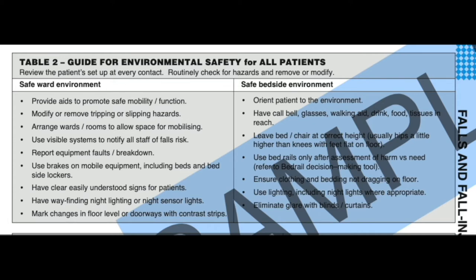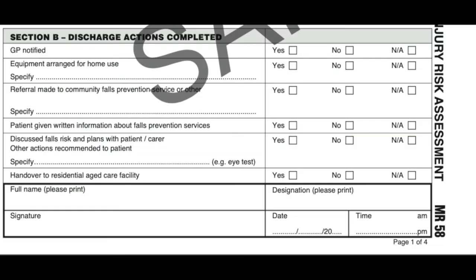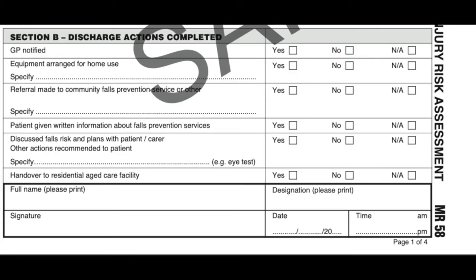Table 2 gives you what constitutes a safe ward and safe bedside environment, and what you can do to provide that for your patients to reduce the risk of falls. Use Section B to record actions taken in preparation for discharge — for example, for people at risk of falls or injuries after discharge. Whatever preparation you make to help keep the patient safe at home, you would list it in Section B.